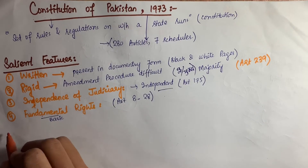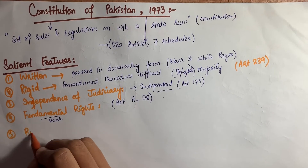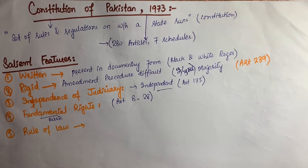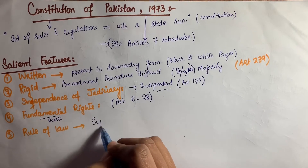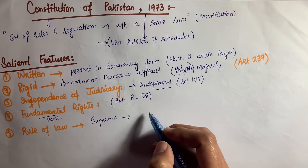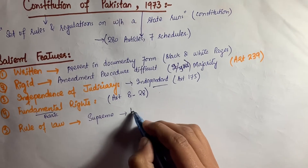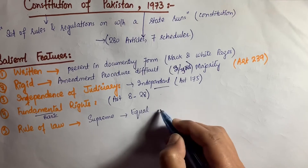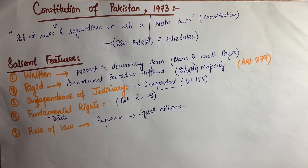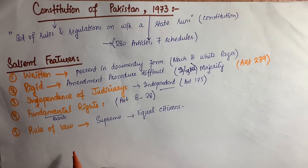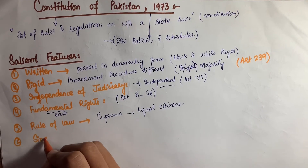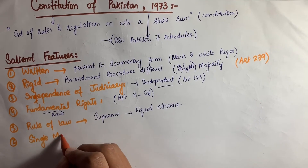Number four is fundamental rights. Fundamental rights mean basic rights which are provided under Articles 8 to 28 of the Constitution of Pakistan 1973. The fifth main feature is rule of law, which means that the law is supreme, and the law says that all citizens are equal in the eyes of the law.